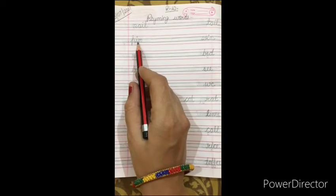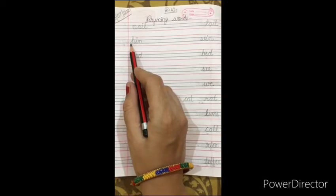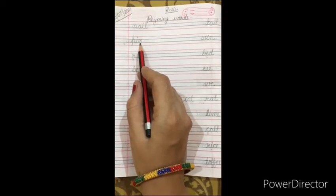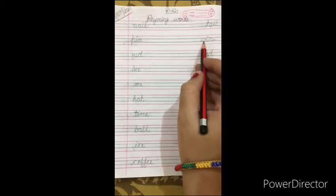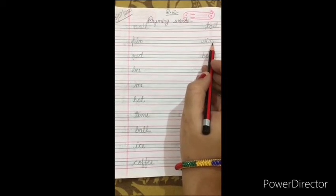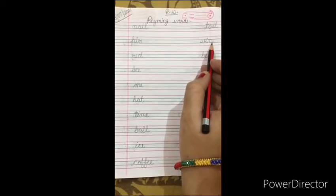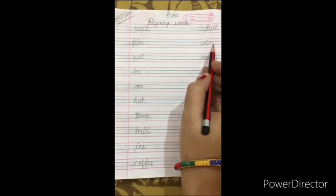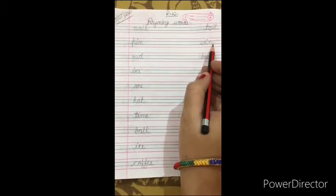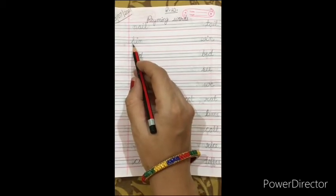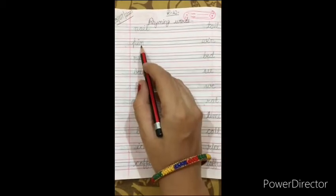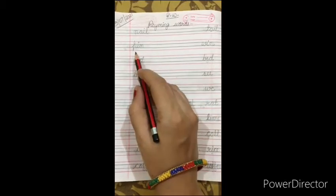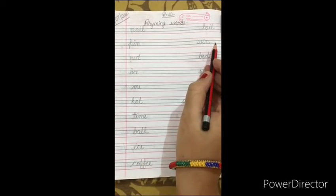Next, P-I-N, pin. P-I-N, pin. Abhi pin ka rhyming word, ma'am nahi ha write kiya, W-I-N, win. You can also write here tin. Sin. Koi bhi word hai write kar sakte ho, but it should be of same ending sound. Pin, win. Pin, tin. Pin, sin. Clear.